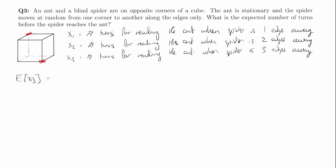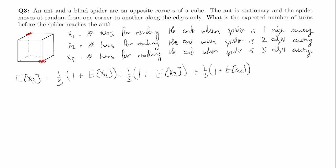If the spider goes to the left, that has probability one third, and he already takes one turn. So this contribution is one plus E[x2]. And since in any direction he goes it's always one plus E[x2], we get that E[x3] is equal to one plus E[x2].